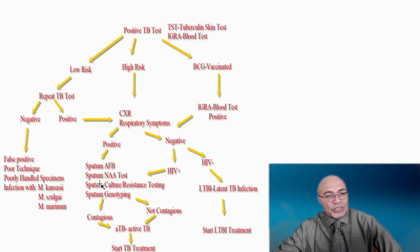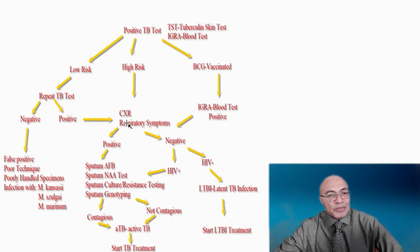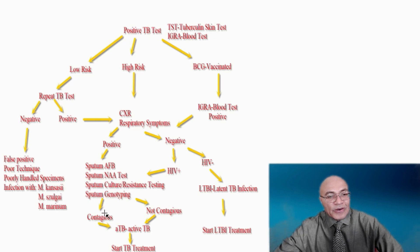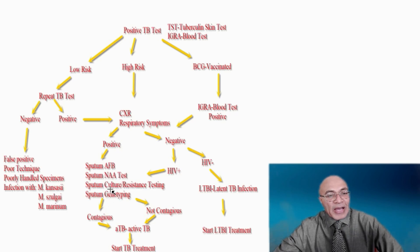All of these patients, once determined to have signs and symptoms of active tuberculosis disease, are started on TB treatment. Those who have AFB in their sputum are considered contagious and are isolated until their sputum is negative on three occasions. Those without any bacteria in their sputum are considered non-contagious but are continued on their treatment regimen for active TB disease.